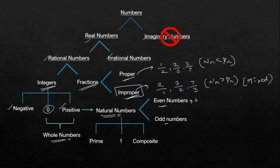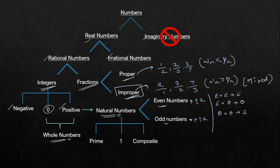Positive integers combined with zero are called whole numbers; positive integers alone are called natural numbers. Natural numbers divide into even numbers — divisible by 2 — and odd numbers — not divisible by 2. Key properties: even + even = even; even + odd = odd; odd + odd = even. For multiplication: even × even = even; even × odd = even; odd × odd = odd.